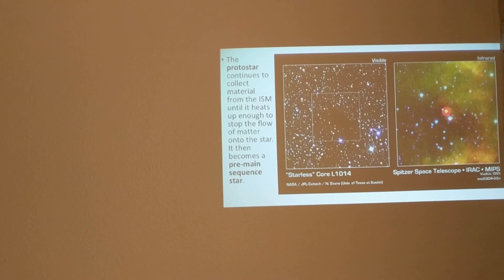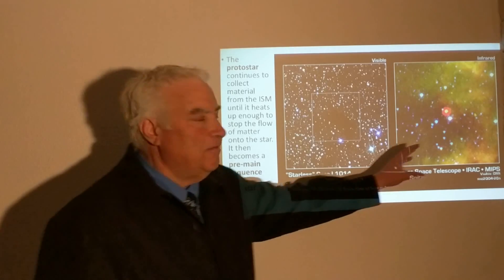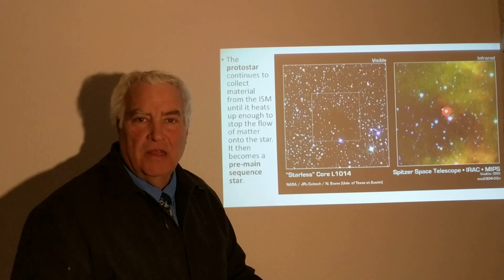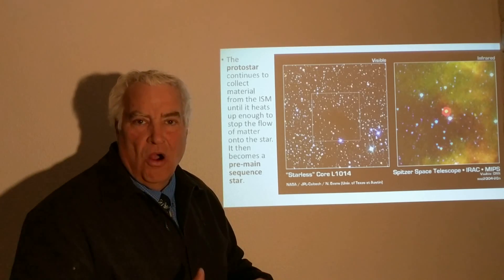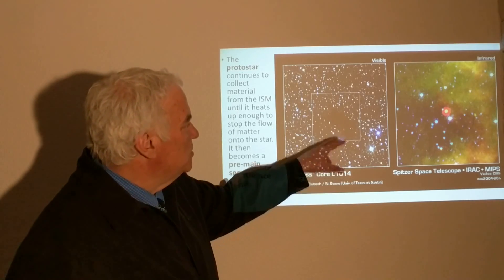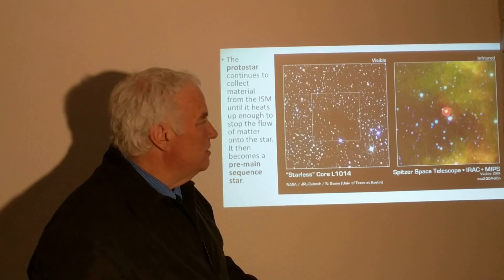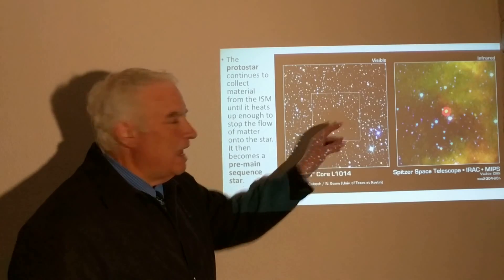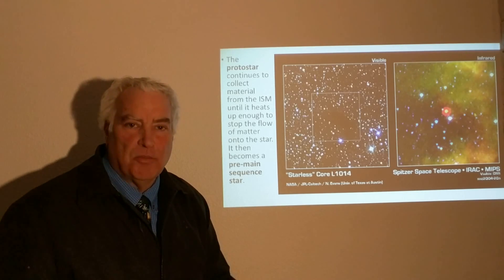We can see the difference that wavelengths make when observing. In visible light, this Bok globule shows a dark region where we can't see stars because it's too dense. In infrared, observed with the Spitzer Space Telescope, infrared light can travel through dust clouds and detect warm-to-hot objects within them. Inside that same region, we can detect a protostar forming — these are observations of actual stars in the process of forming today.